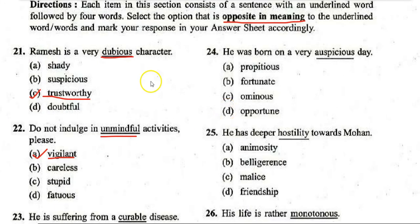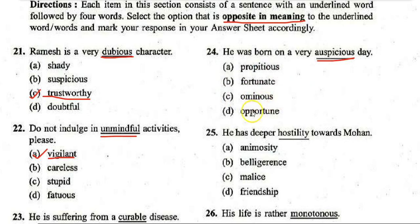Next: 'He was born on a very auspicious day.' Options: A. Propitious, B. Fortunate, C. Ominous, D. Opportune. The correct answer is C — 'ominous.' The antonym of 'auspicious' is 'ominous.'